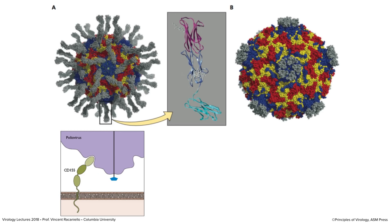Around each five-fold axis there's a depression in the particle. The receptor CD155 fits its first domain into this groove that encircles the five-fold axis. With 12 five-fold axes, you could in principle bind 60 receptor molecules. When the structure of poliovirus was first determined in 1985 — the first animal virus structure — people saw this groove and assumed all icosahedral viruses bind receptors the same way. But it's never that simple.